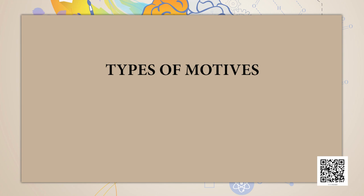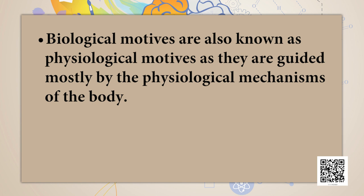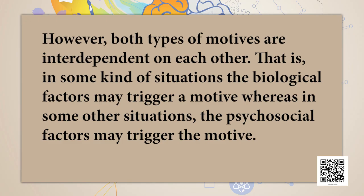There are two basic types of motives: biological and psychosocial motives. Biological motives are also known as physiological motives, as they are guided mostly by the physiological mechanisms of the body. Psychosocial motives, on the other hand, are primarily learned from the individual's interactions with various environmental factors. However, both types of motives are interdependent — in some situations biological factors may trigger a motive, whereas in others psychosocial factors may trigger the motive.